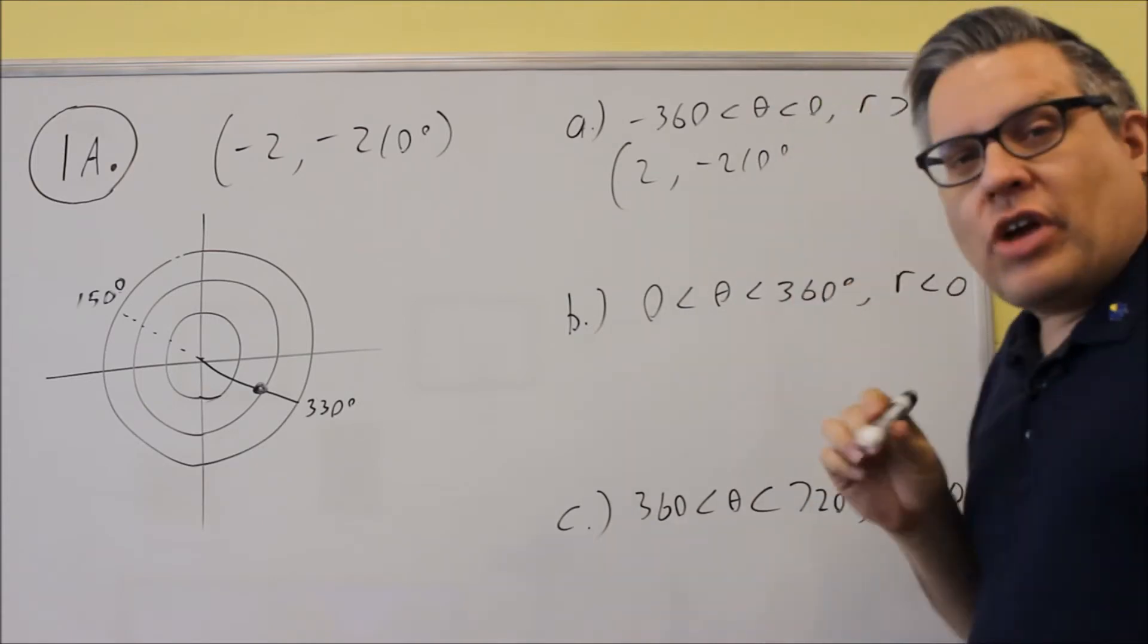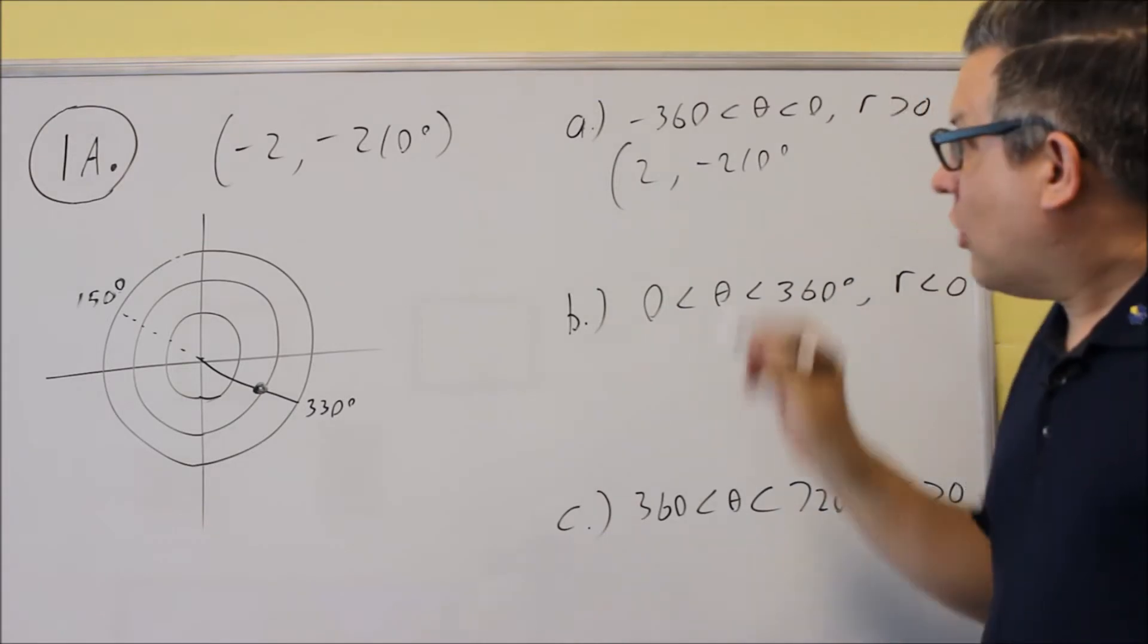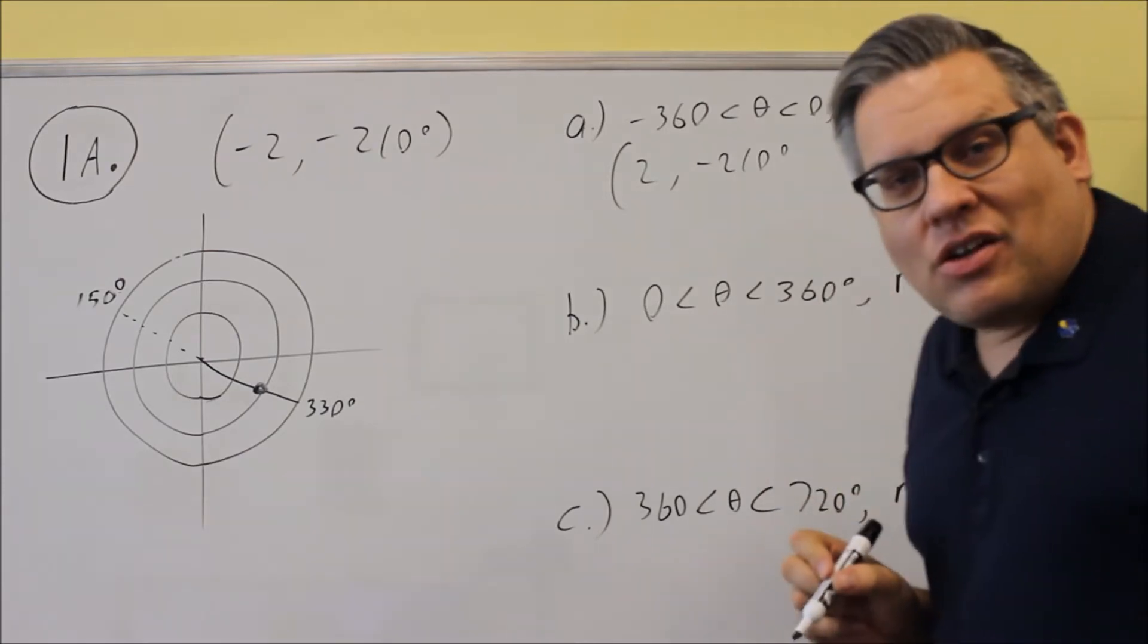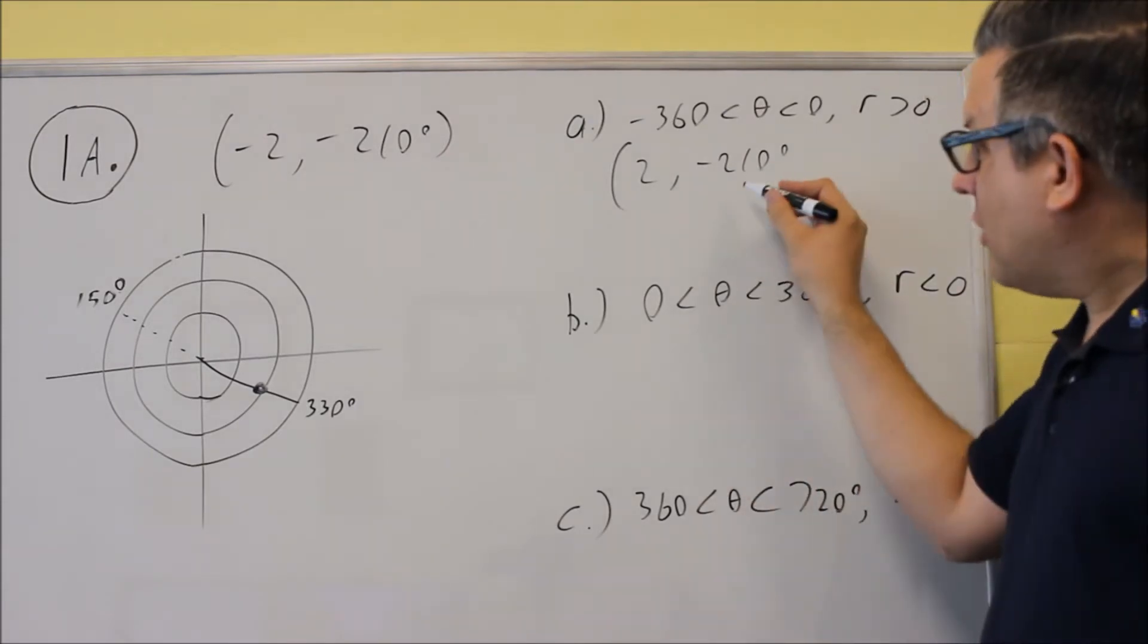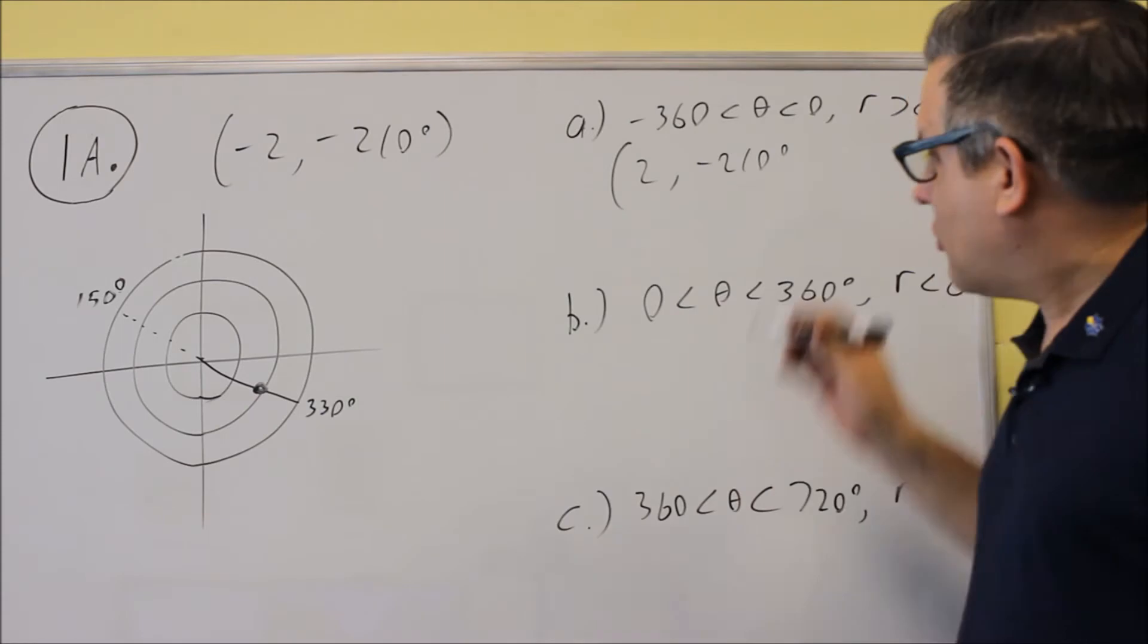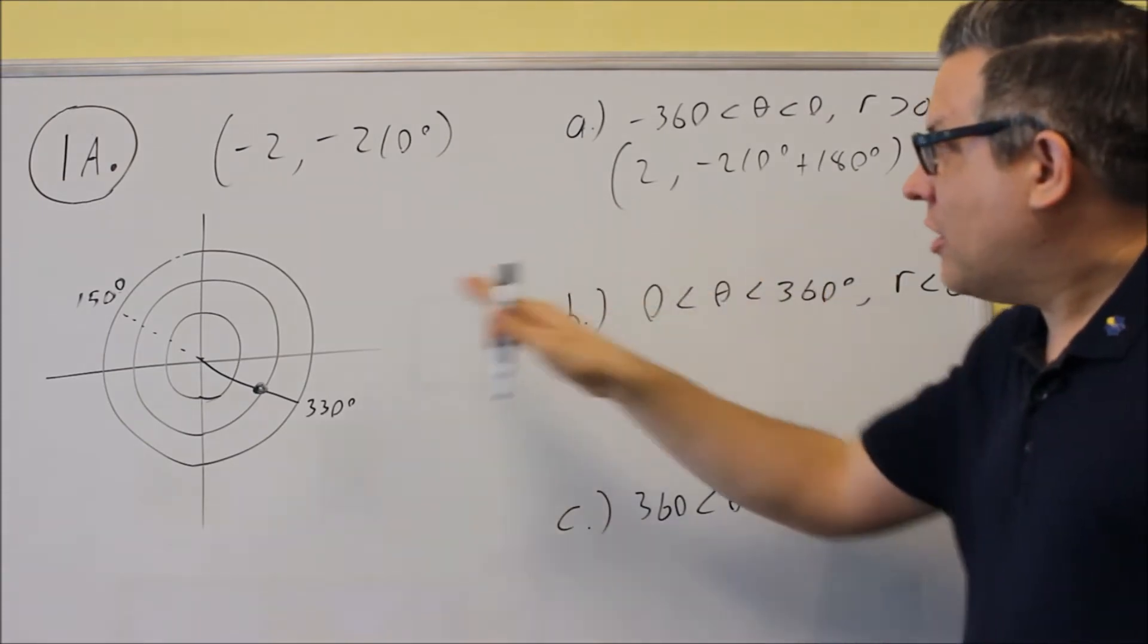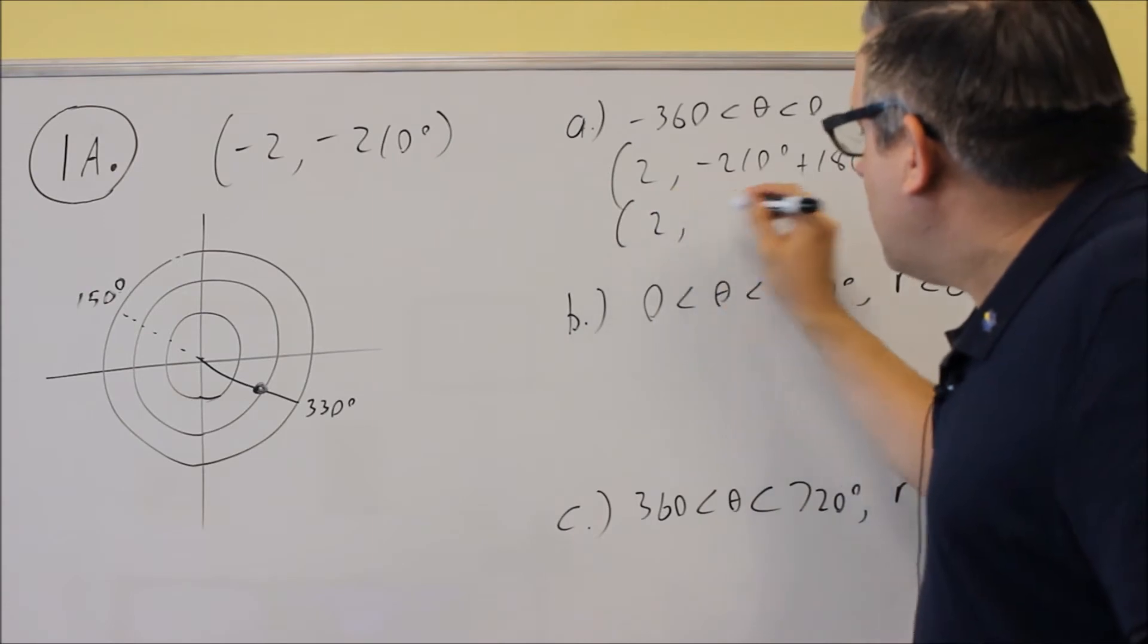And then whether you add or subtract depends on what you want that angle to end up as. You want a negative angle between negative 360 and zero, which means that if I were to add 180 to it, that would work. If I subtracted 180, then I'd be less than negative 360 degrees. So instead, I'm going to choose to add 180 degrees there. So again, I'm using 180 because I'm changing this from a negative R to a positive R.